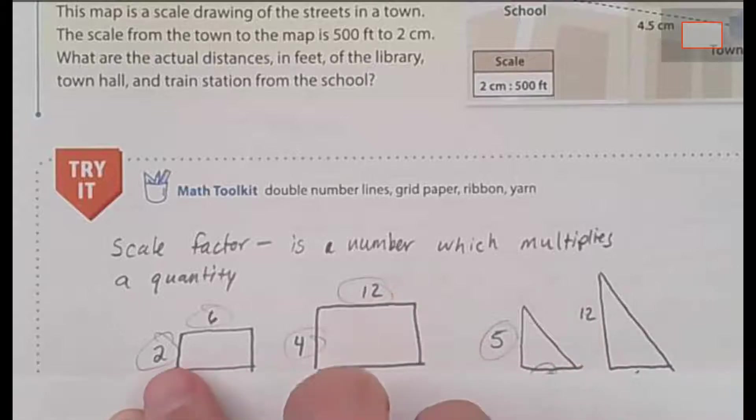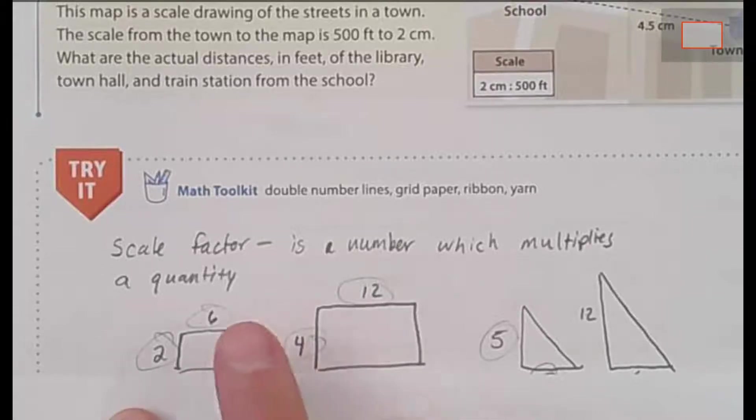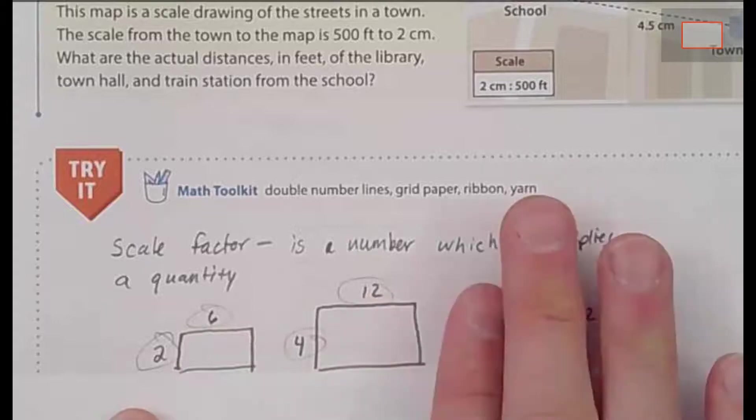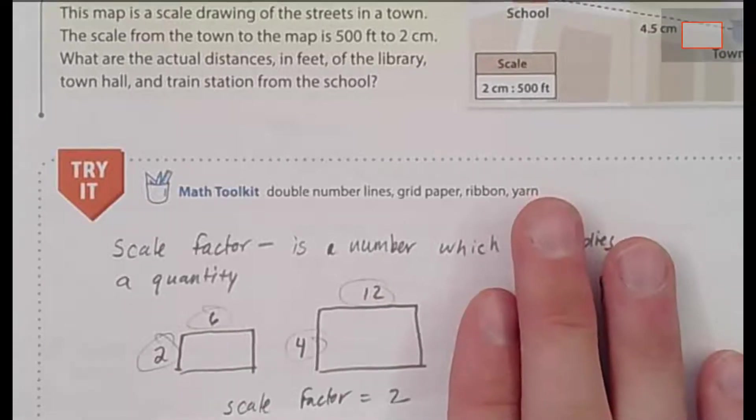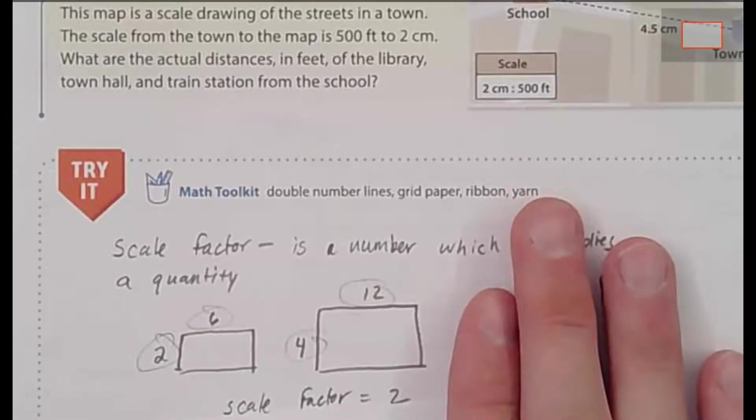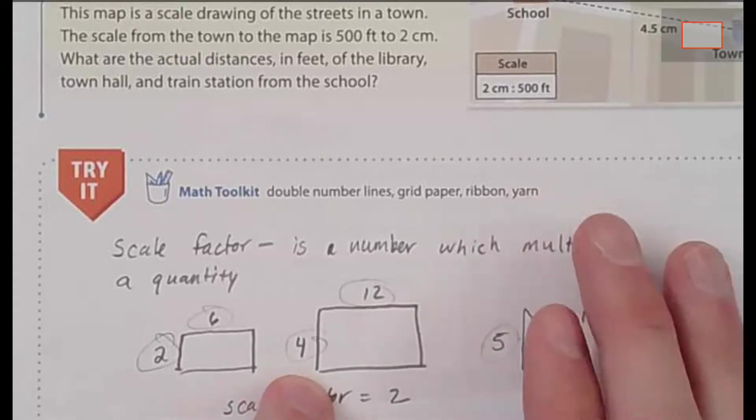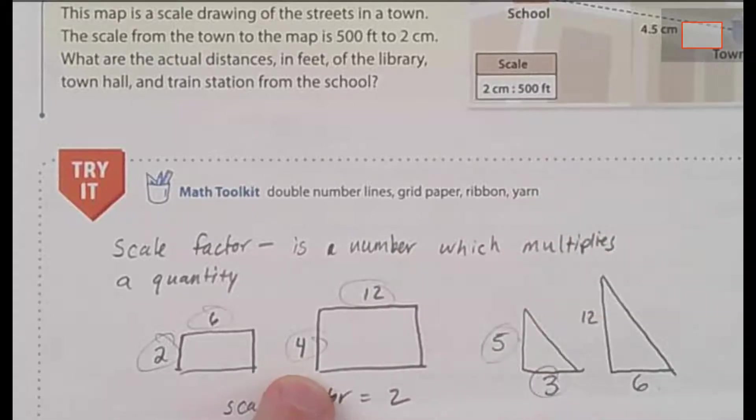You've got the sides of 2 to 6 and the sides of 4 to 12. In this rectangle, you'll notice in order to prove that this rectangle is a scale copy of this rectangle, we've got 2 times 2 gives us 4 and 6 times 2 gives us 12. So we have a scale factor of 2 in those two rectangles.